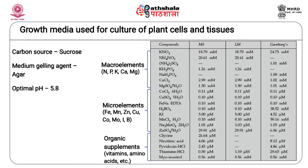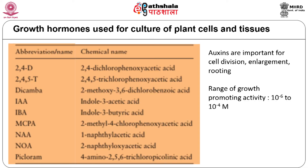The medium may be used in the solid form, where it is gelled by adding agar, or in the liquid form. The optimum pH for culturing plant tissues is 5.8. Two main classes of hormones are used in plant tissue culture media to induce cell division, growth and differentiation.